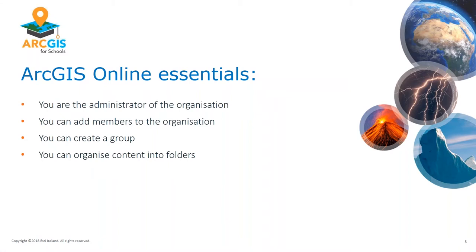So I've just gone through a few ArcGIS Online essentials: you're the administrator of the organization, you can add members one at a time or through a CSV, you can create different roles, create groups to share content, and organize your own content into folders. Hopefully that makes sense — do shout at me if there are any questions.